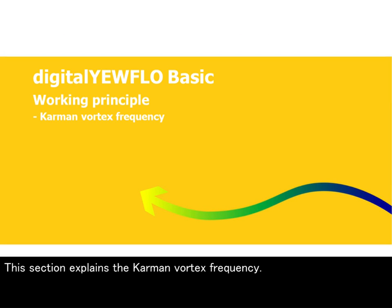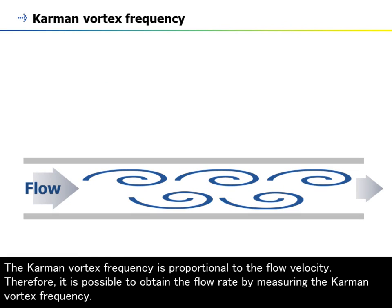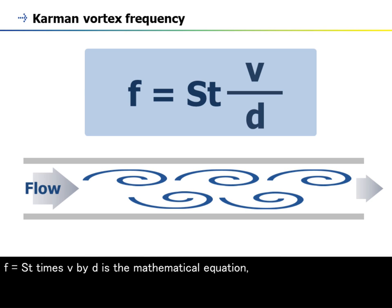The Karman vortex frequency is proportional to the flow velocity. Therefore, it is possible to obtain the flow rate by measuring the Karman vortex frequency. f equals St times v by d is the mathematical equation.